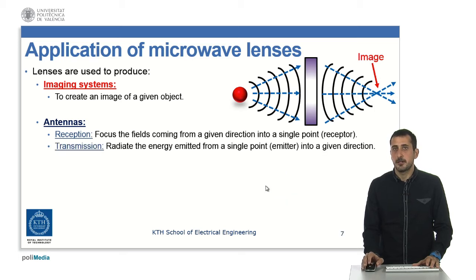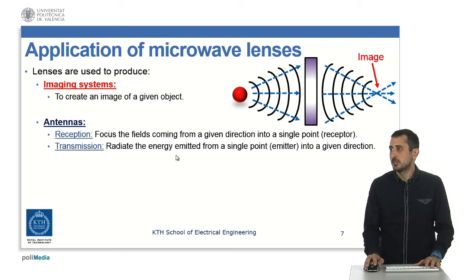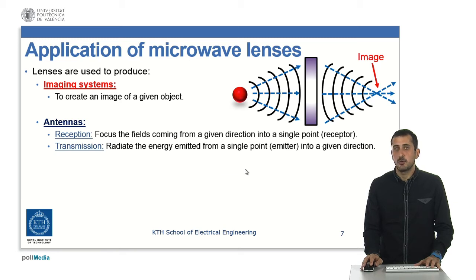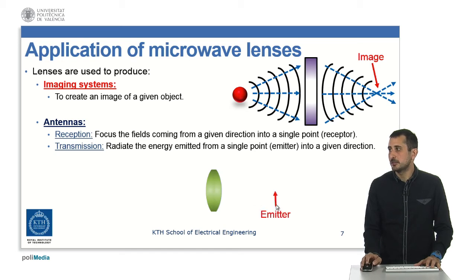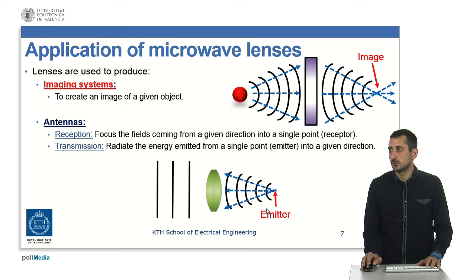In transmission it is the equivalent phenomenon but from the other side. Essentially, we want to transmit the energy from our source or antenna — located more or less at a single point — in a certain given direction. So the emitter emits a wave arriving at our lens, and after the lens we have something quite flat, meaning we are transmitting essentially in one direction.